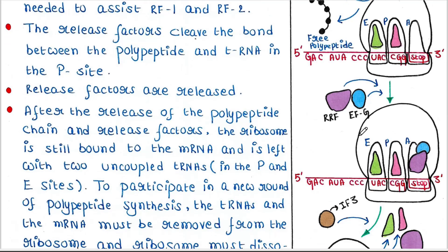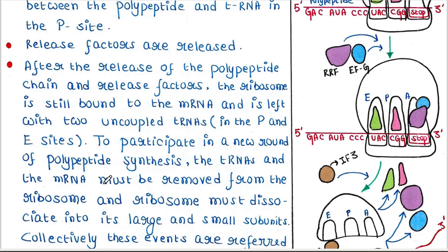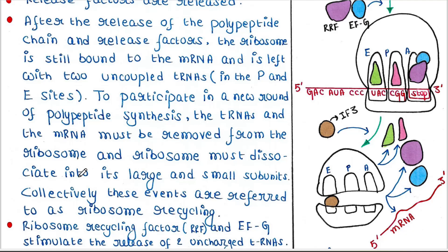After the release of the polypeptide chain and release factors, the ribosome is still bound to the mRNA and is left with two uncharged tRNAs in the P site and E site. To participate in a new round of polypeptide synthesis, the tRNAs and the mRNA must be removed from the ribosome, and the ribosome must dissociate into its large and small subunits. Collectively, these events are referred to as ribosome recycling, which involves separating the two ribosome subunits, releasing the two uncharged tRNAs, and releasing the mRNA.